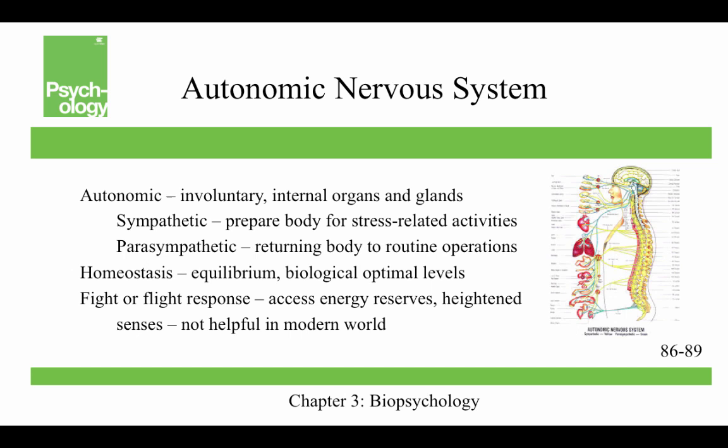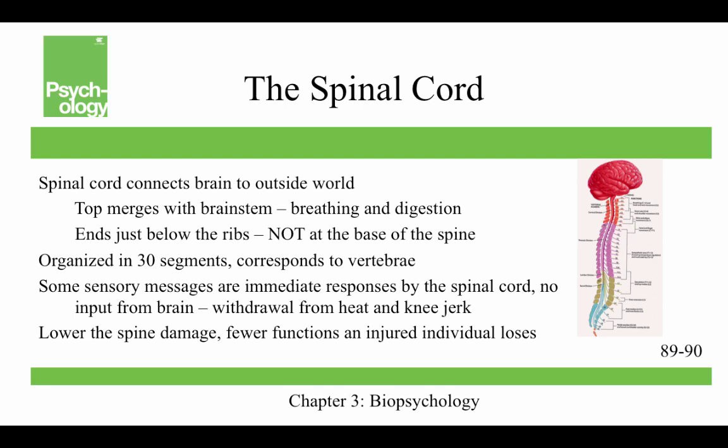The autonomic nervous system is divided into the sympathetic and parasympathetic systems. The sympathetic system prepares the body for stress-related activities, while the parasympathetic system returns the body to routine operations. These systems have complementary functions and operate to maintain homeostasis — like an equilibrium keeping your body at optimal biological levels, such as 98.6°F body temperature.